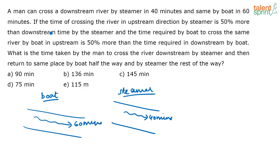If the time of crossing the river in the upstream direction by the steamer is 50% more than the downstream direction by the steamer, and the time required by the boat to cross the same river upstream is 50% more than the time required in the downstream by the boat.